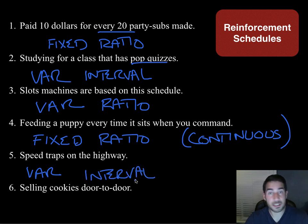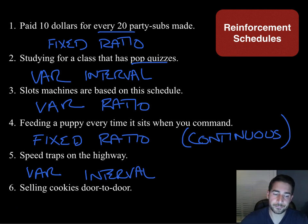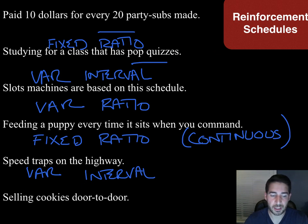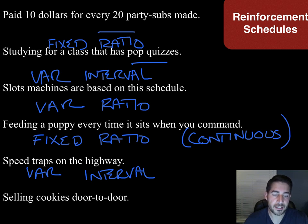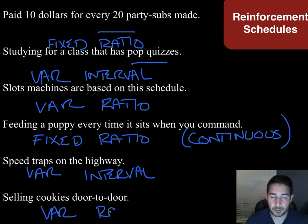If you happen to be speeding when there is a speed trap, then you're going to get rewarded — with a ticket. And selling cookies door to door: do you know who's going to say yes? You don't. So it's variable. Does your behavior have something to do with when you're going to sell the cookies? Yes. So it's variable ratio.